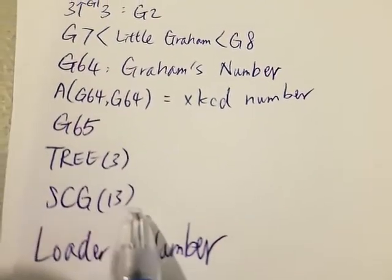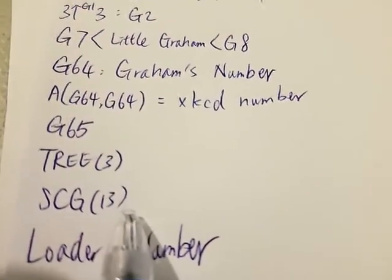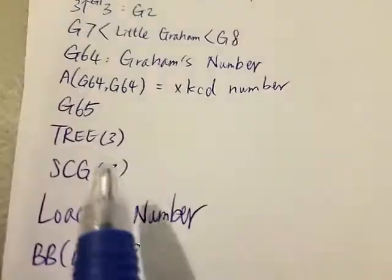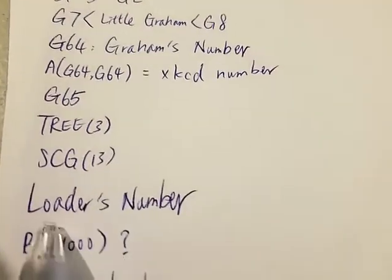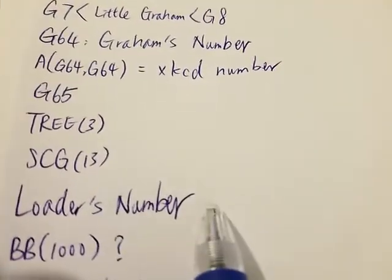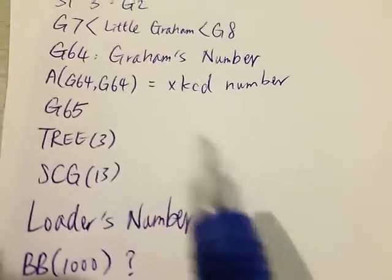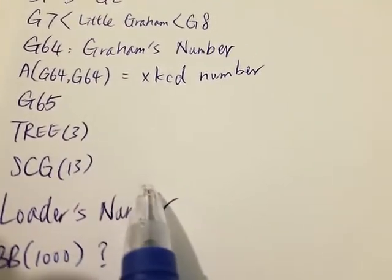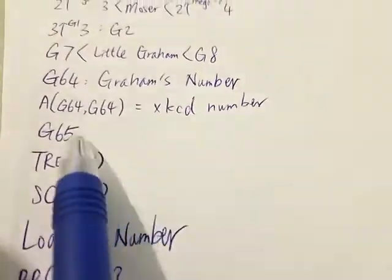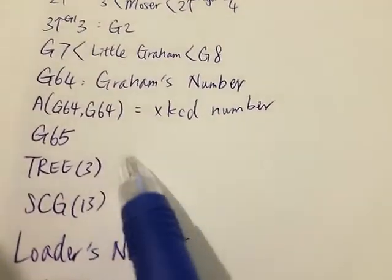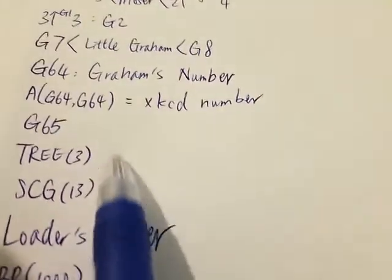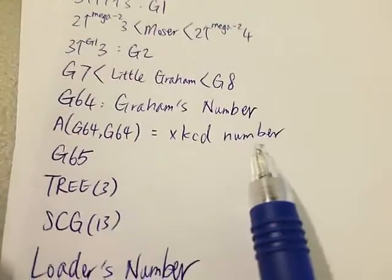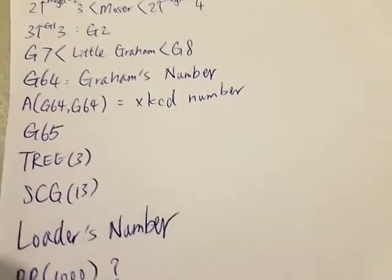Next we have SCG(13), which is much bigger than 3↑↑↑↑3. Then we have Loader's number, which is much bigger than SCG(13). Numbers after G65 — there's a big gap between those numbers, and we don't even know how big the gap is.